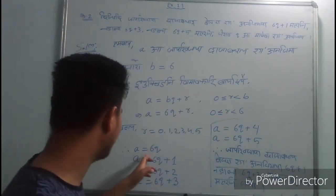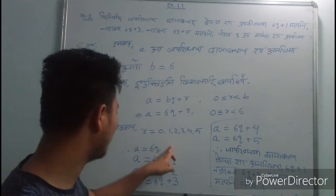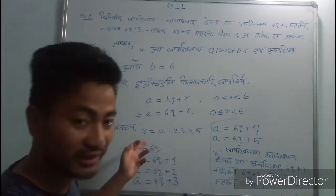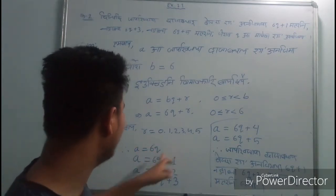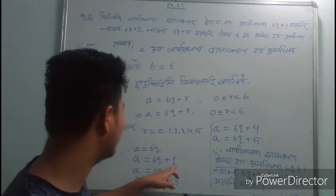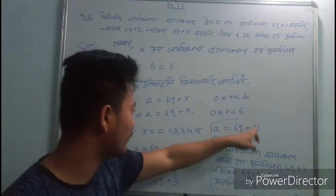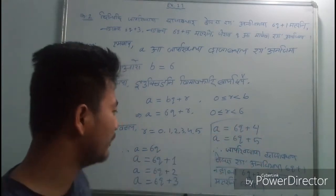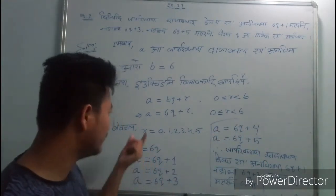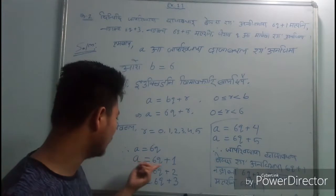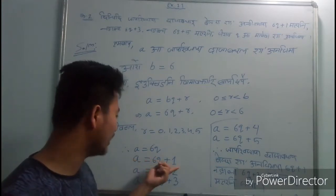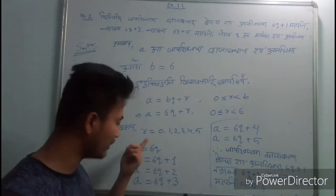We have 6q, 6q plus 1, 6q plus 2, 6q plus 3, 6q plus 4, and 6q plus 5. This is the complete set of forms.